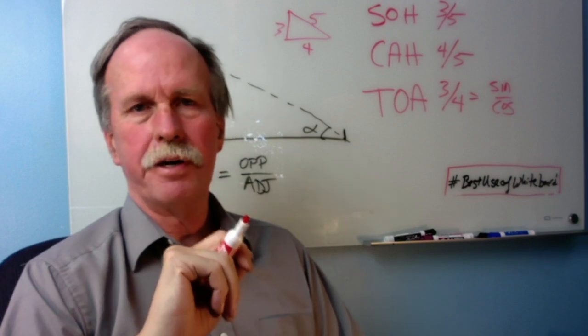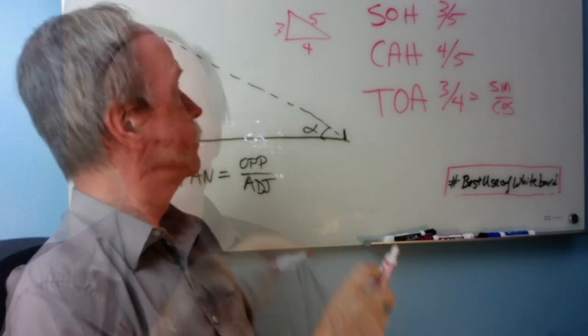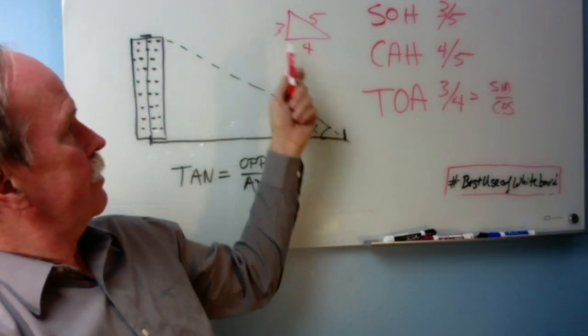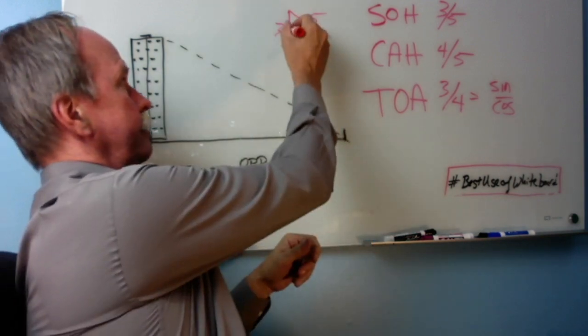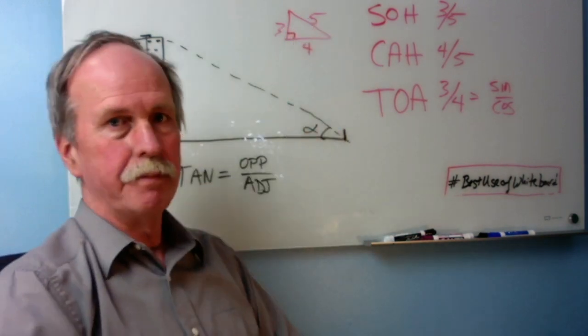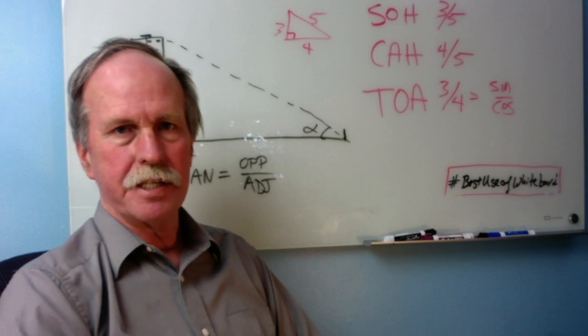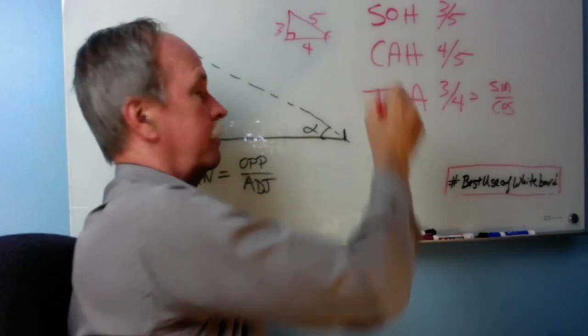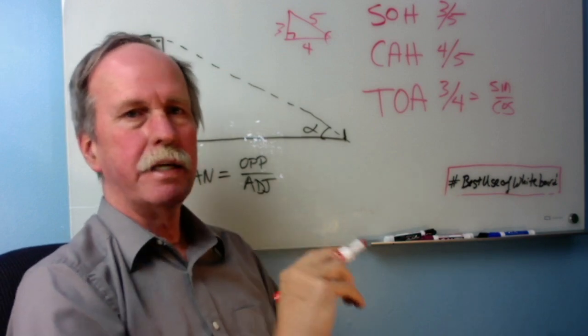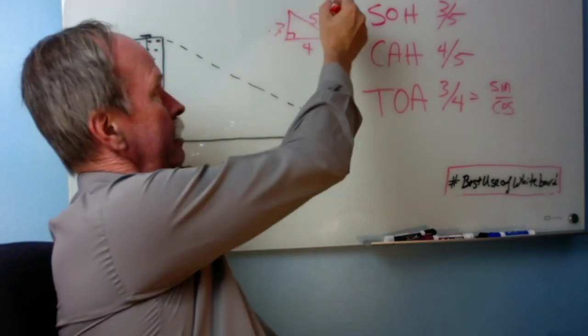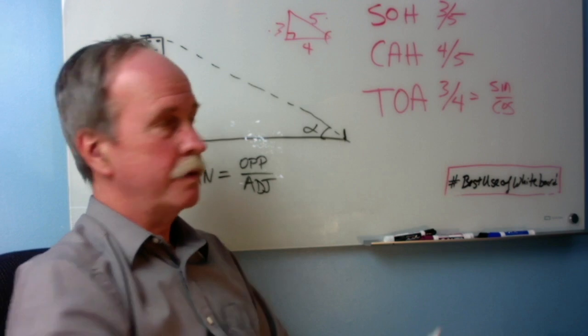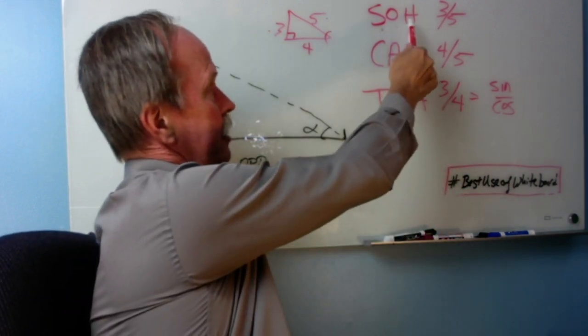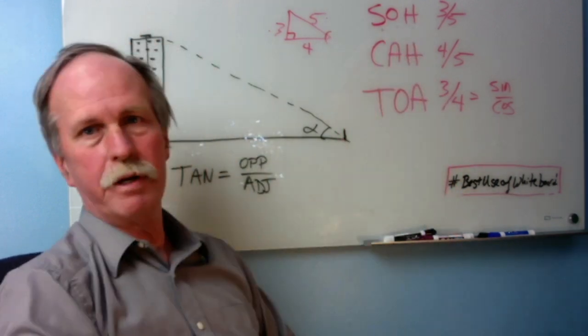Well let's go over what we started in our first episode real quick. Now if we take our triangle which is a three four five triangle, that's a right angle right there, we know the lengths of those sides. Now what is the sine of this angle right here? Well the sine is the opposite over the hypotenuse. Sine is opposite over hypotenuse and it'll be three over five.